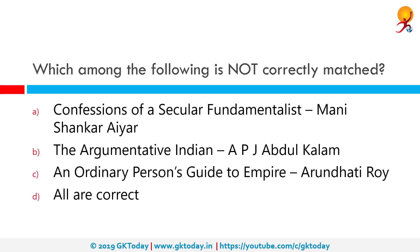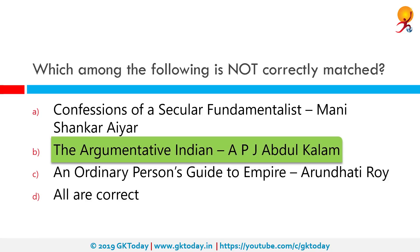Which among the following is not correctly matched? Among the given options, option B is incorrect. 'The Argumentative Indian' was written by Amartya Sen, who is a Nobel Prize-winning Indian economist and philosopher.